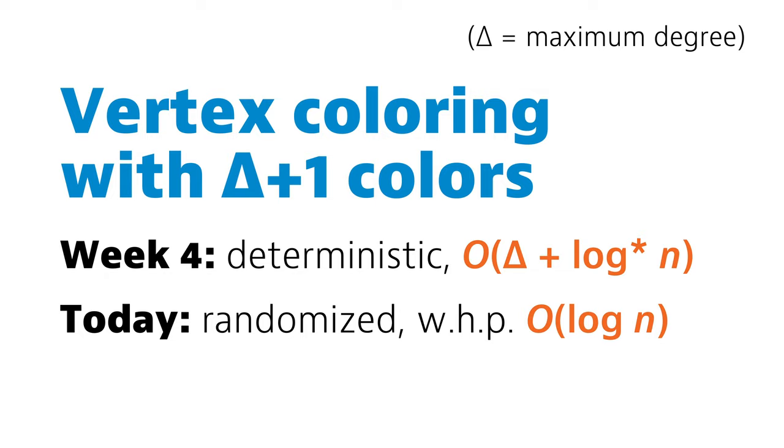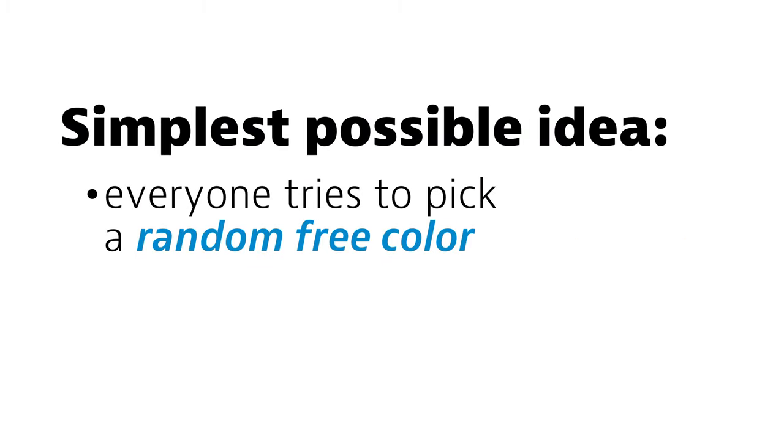The algorithm and its analysis are really easy. Let's start with the simplest possible idea one could imagine. Each node just checks which colors are currently free in its local neighborhood. Then each node picks a random color from the set of free colors. And then it checks if there are any conflicts. If I managed to pick a color different from the colors of my neighbors, I can stop.